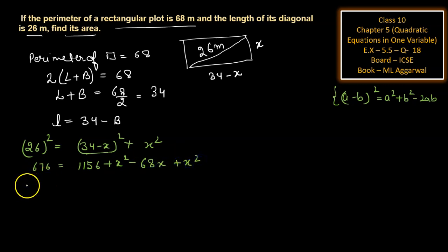Simplifying: 2x² minus 68x plus 1156 minus 676 equals 0. So 2x² minus 68x plus 480 equals 0.